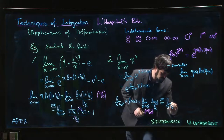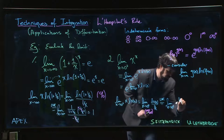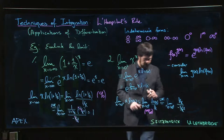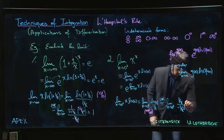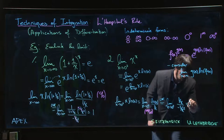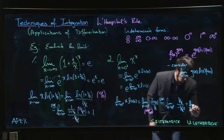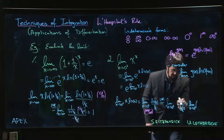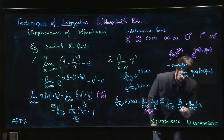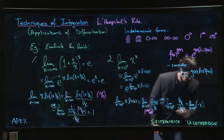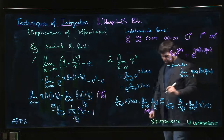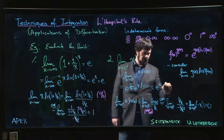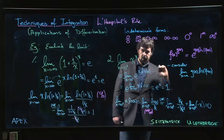Applying L'Hôpital's rule: the derivative of log(x) is 1/x, and the derivative of 1/x is −1/x². So we get (1/x) / (−1/x²), which simplifies to −x². Multiplying −x² times 1/x gives −x, and the denominator becomes 1. As x goes to zero from the right, this limit is 0. So the original limit is e to the 0, which equals 1, and we're done.